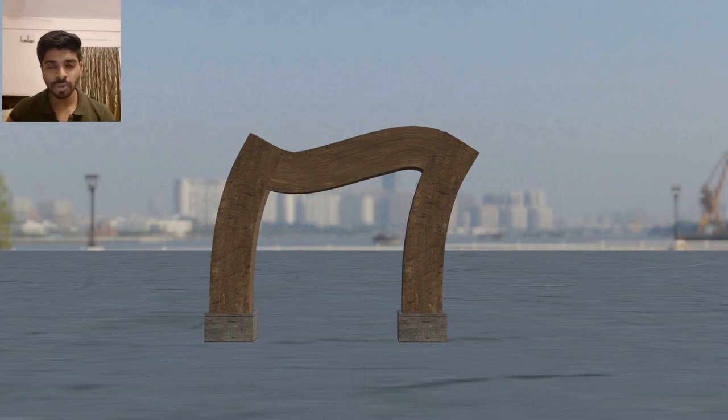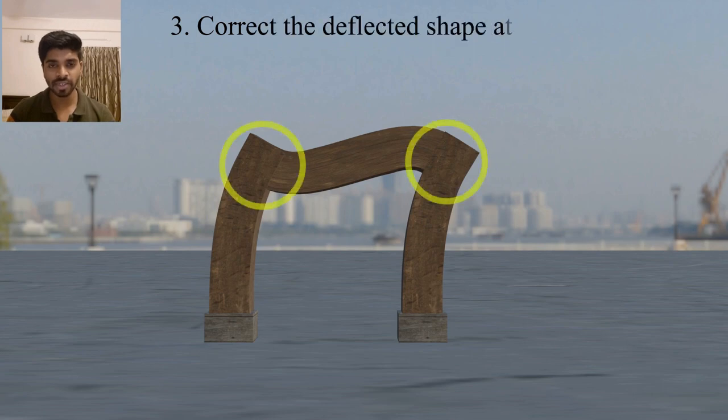Now let's move to our third step, that is to correct the deflected shape at a beam column joint. Here we are going to use our special rule, that is the joint has to be in equilibrium. So here you can create a rough sketch of the deflected shape.